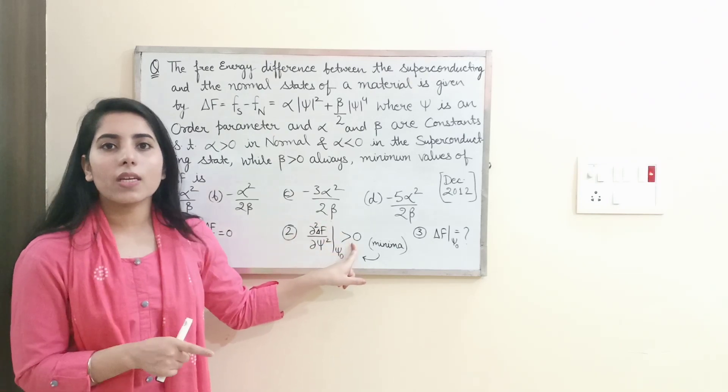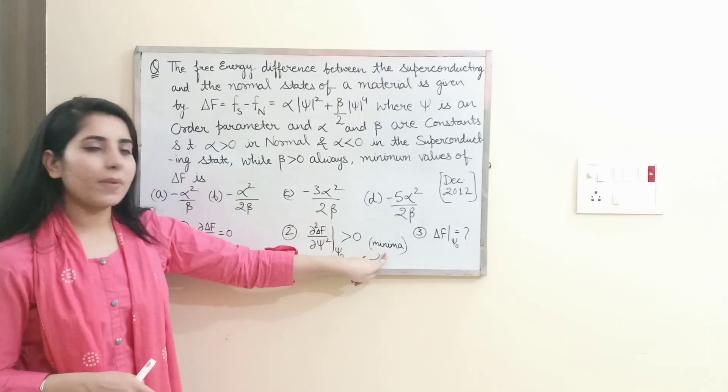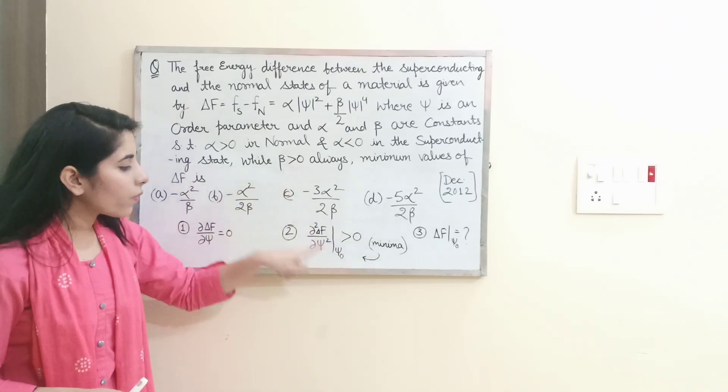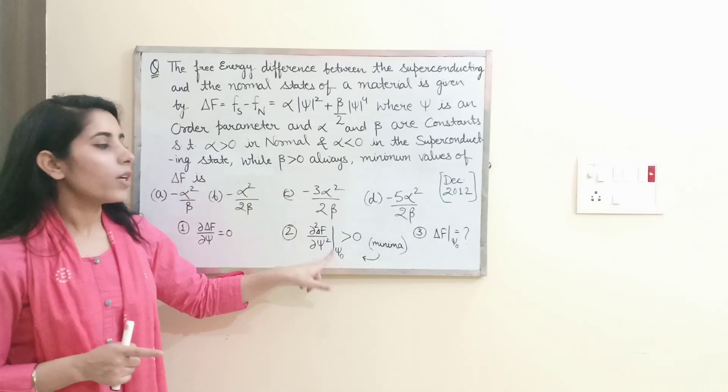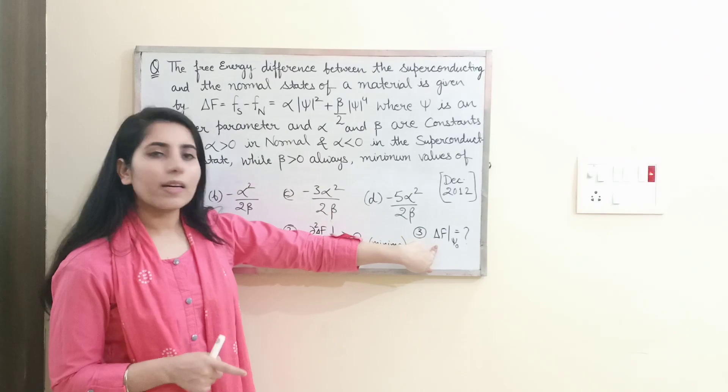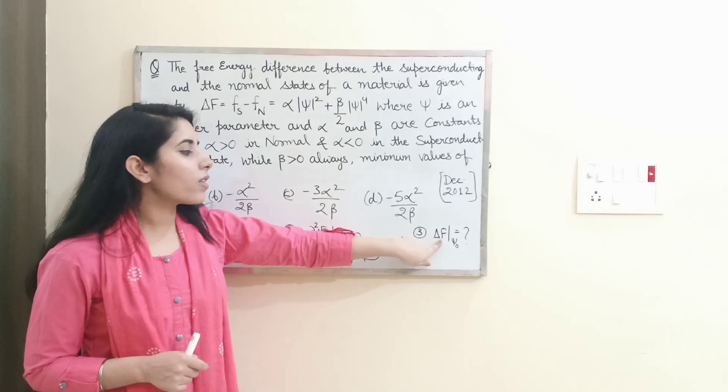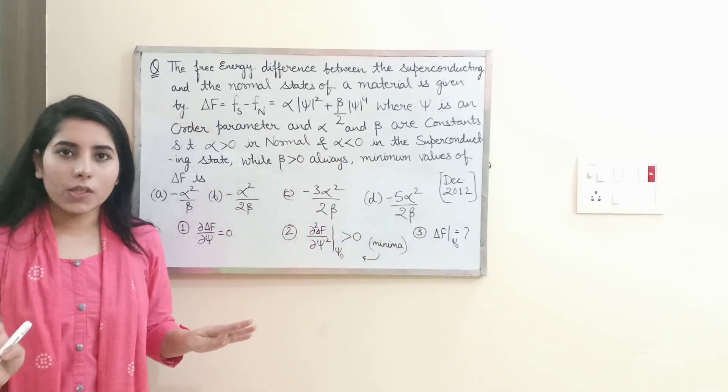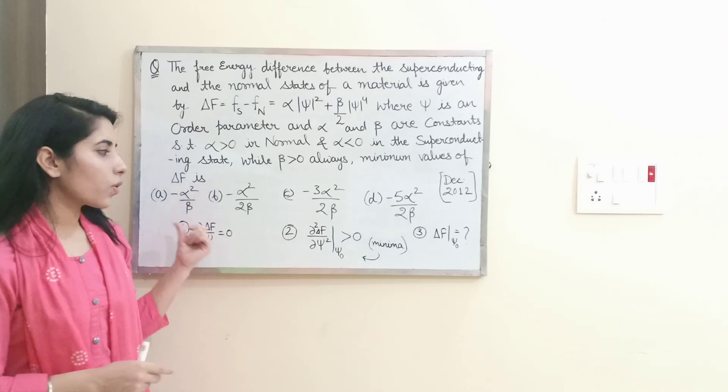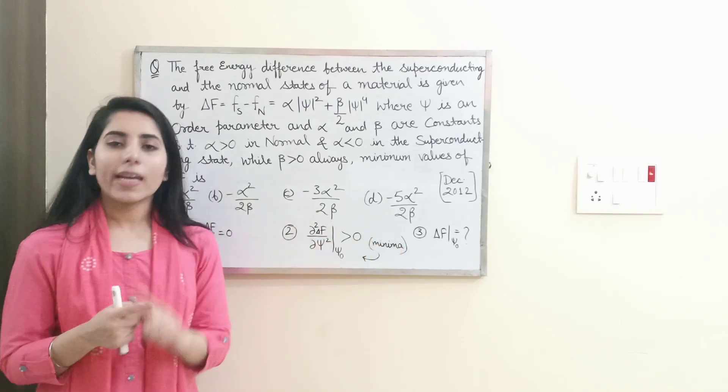And at that value of sign, what you need to do is find the value of delta f. So after finding this value, you are reaching your final answer. Now what you need to do is take these steps and get the final answer.